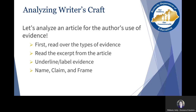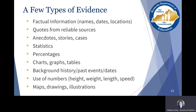When we think about types of evidence, here are a few basic ones. Think about factual information: writers give us names, dates, and locations — specific information that gives us details we need to know. Quotes from reliable sources are extremely important in professional writing. We also look at experts in the field. Anecdotes, stories, and cases play a very important role in writing.